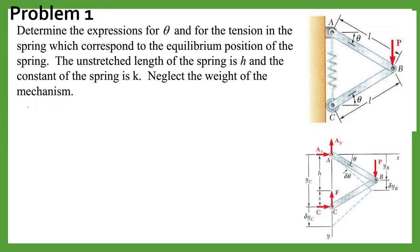So we will write here solution. The total work will be delta U = P times delta YB minus F times delta YC. We have taken it minus because the forces and displacement are in opposite directions, and this should be zero according to the principle of virtual work.